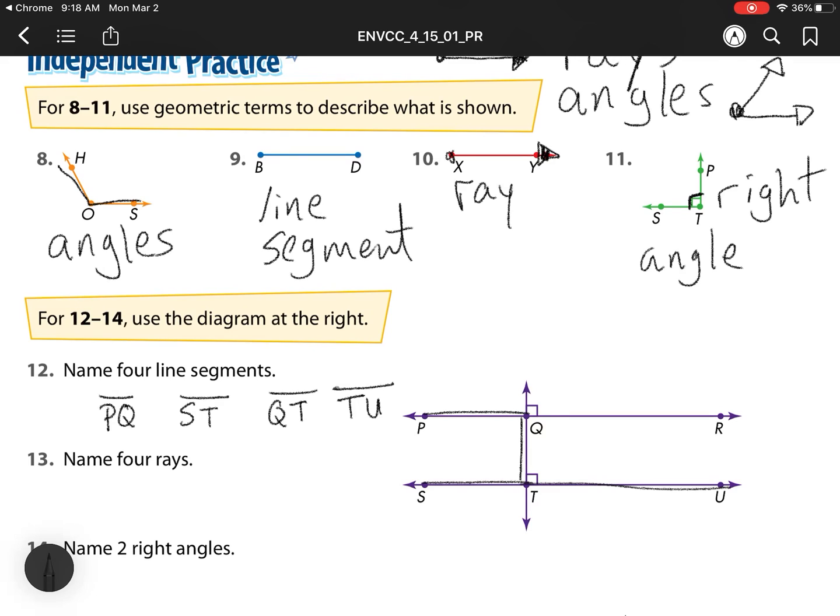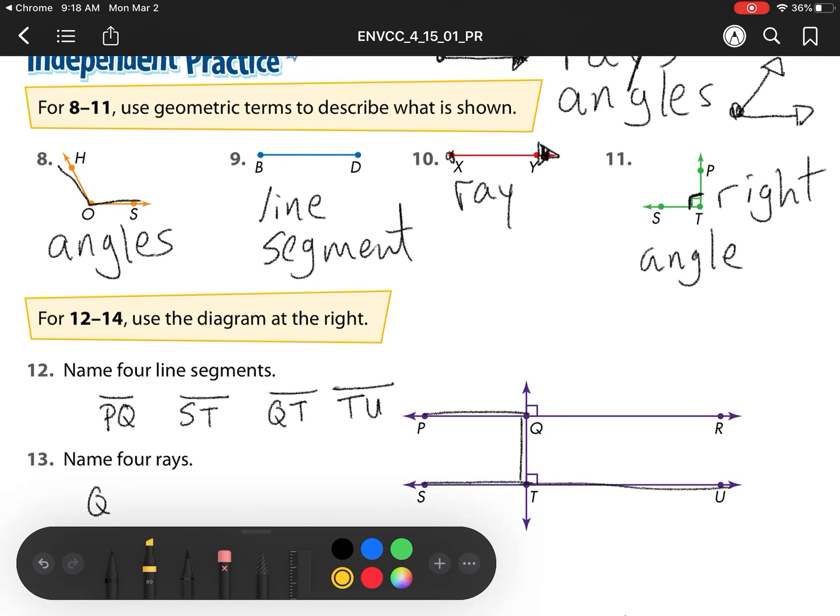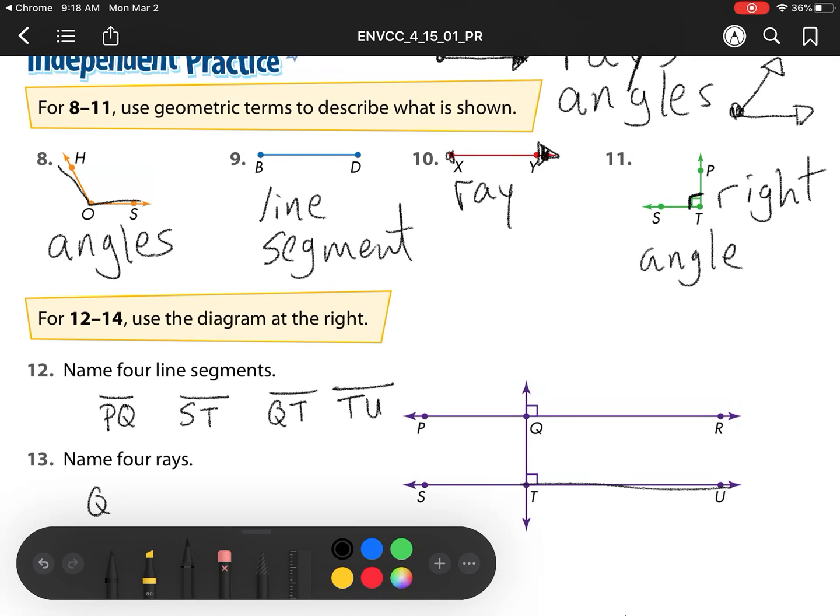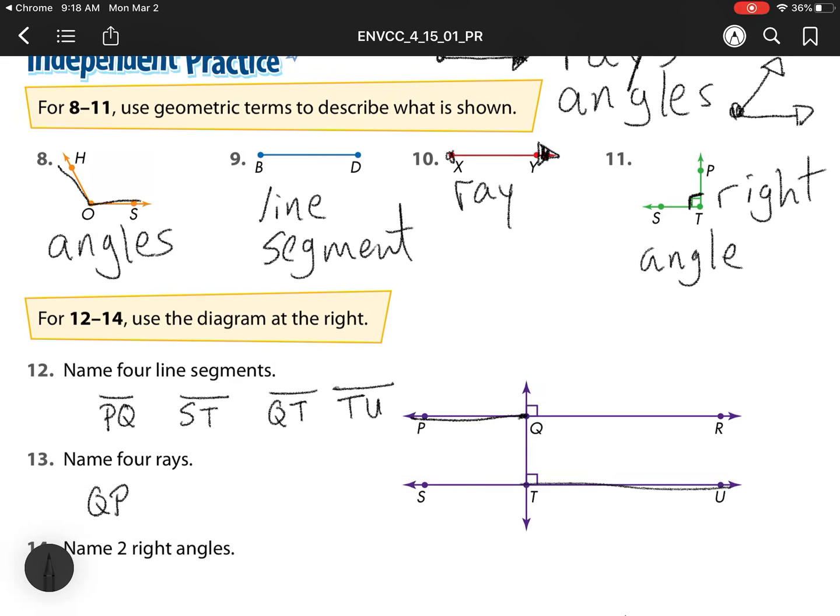Name four rays. I'm going to start with Q and go backwards, so Q to P. How do I label that? I put a line and then that arrow above. I also have T to S. I start at T and I'm going to S, so I put that arrow to the right.